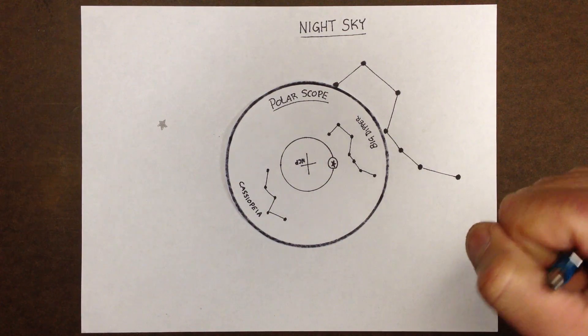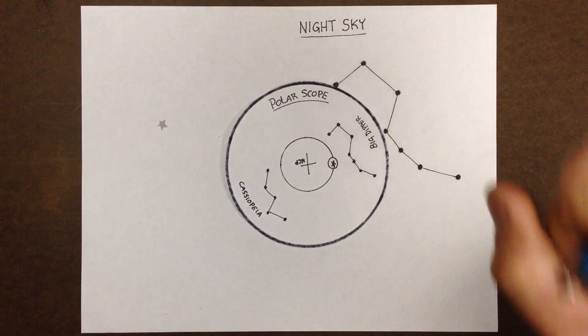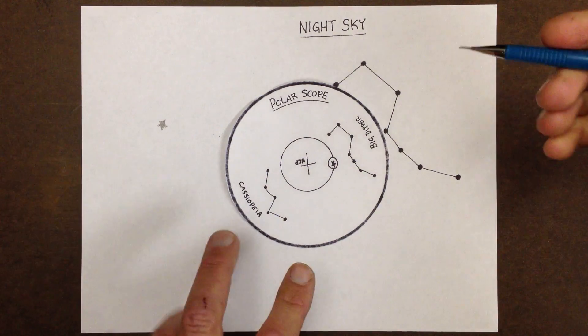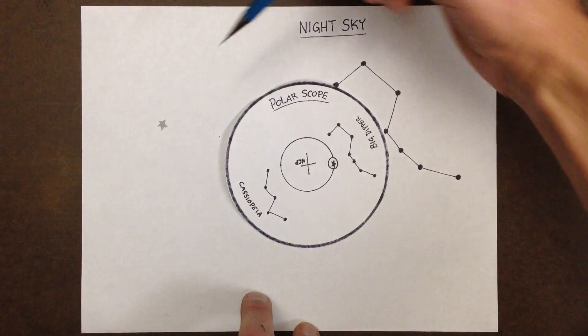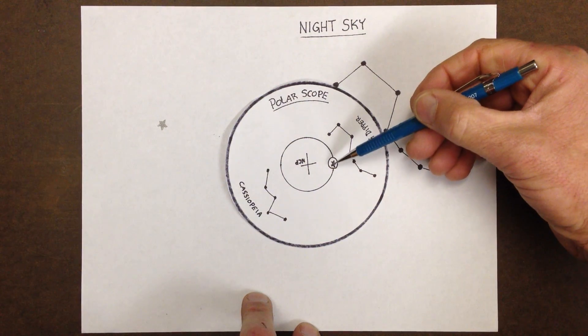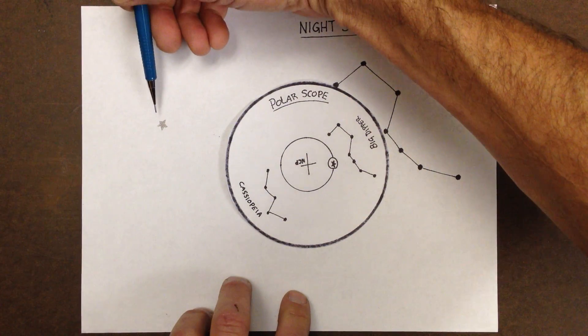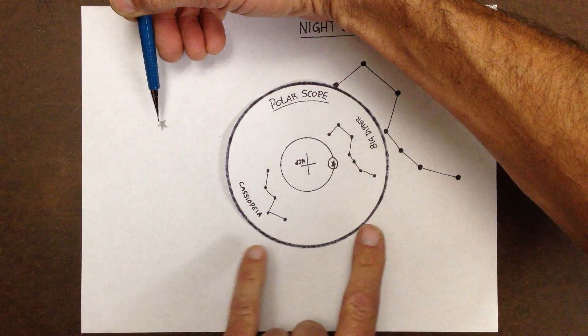When that's tightened down, what you want to do is place the north star, which is here, inside the center of the small circle. So I'll put my pencil right over the north star. Now you want to adjust the mount and move the scope over until the north star is right in the middle of this small circle.